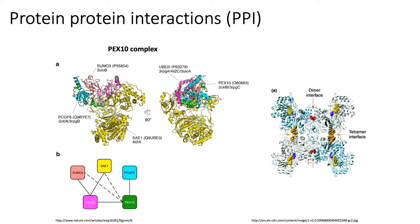The first type of interaction network we'll talk about are the protein-protein interaction networks, or the so-called PPI networks. A PPI network is basically a network in which nodes represent protein domains or individual proteins, and edges indicate some kind of physical interaction.